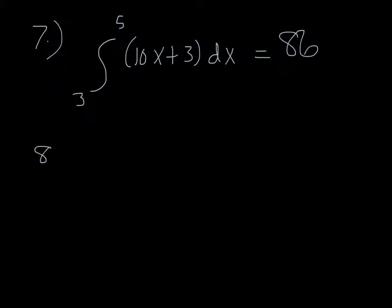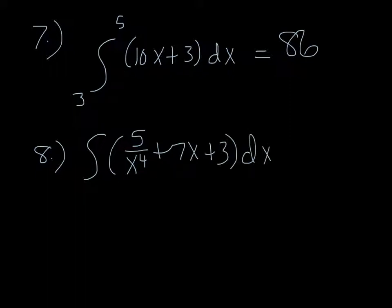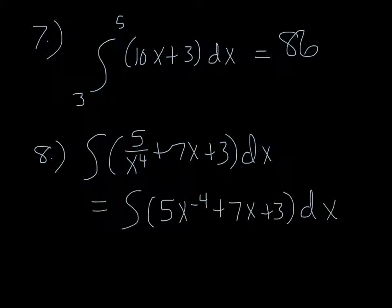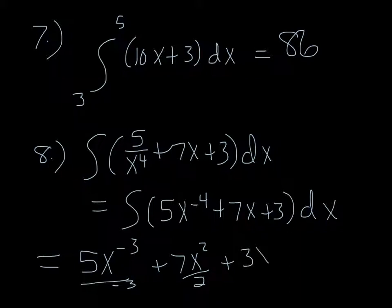Number 8, we have the integral of 5 over x⁴ plus 7x plus 3 dx. I would just change it so it's the integral of 5x^(-4) + 7x + 3. Make it more anti-derivative friendly. So then we're going to get 5x^(-3) over -3 plus 7x² over 2 plus 3x plus c. And we can't really simplify that, so that'll be our answer.